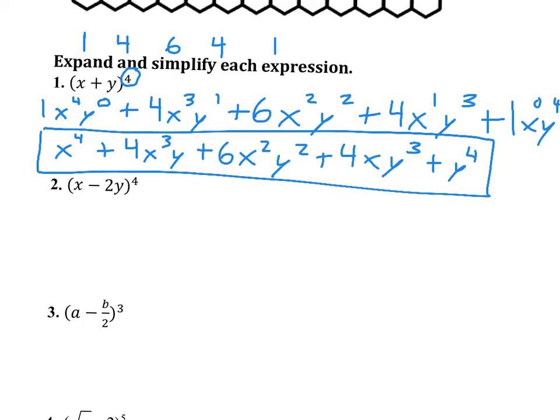That might seem tedious, but it's a lot faster than foiling over and over. Number 2 is a little different because it is subtraction. The subtraction will cause this to alternate — it will go from positive to negative, back to positive, back to negative. So it always starts positive. We're going to use the same numbers because the exponent is 4 again: 1, 4, 6, 4, 1.